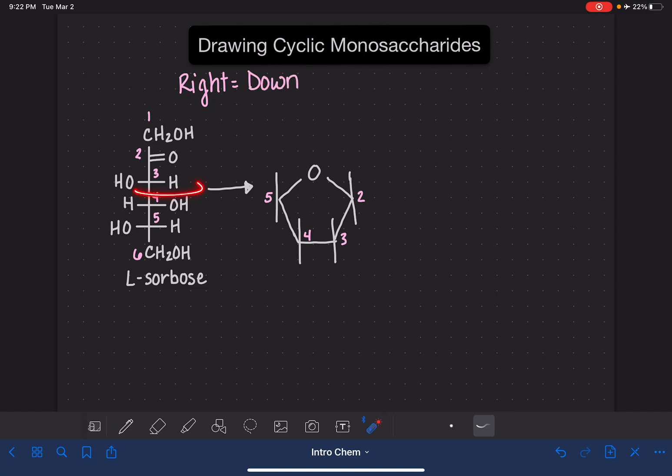Let's start with carbon number three, again, because we want to start with the carbon atoms that are underneath the carbon-oxygen double bond. So for carbon number three, the OH group is on the left-hand side. That means that it is going to be pointing up in the cyclic structure. And for carbon number four, the OH group is on the right-hand side, which means that it will be pointing down, just like that.